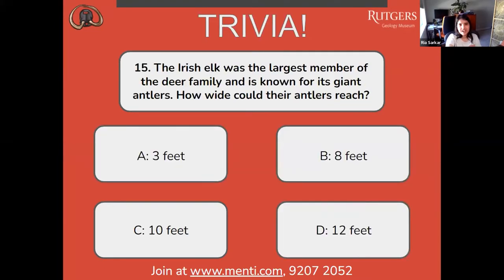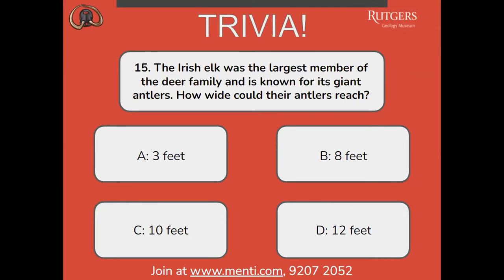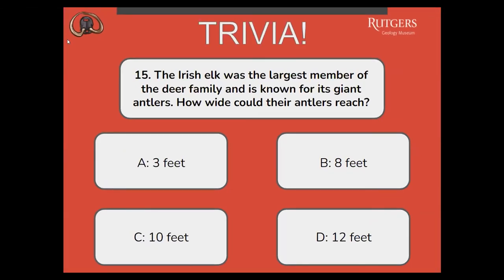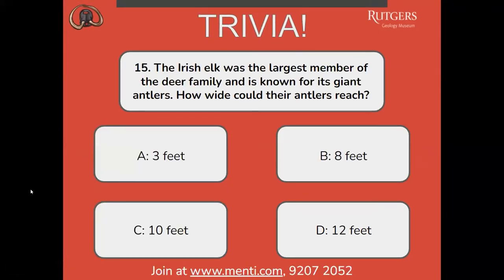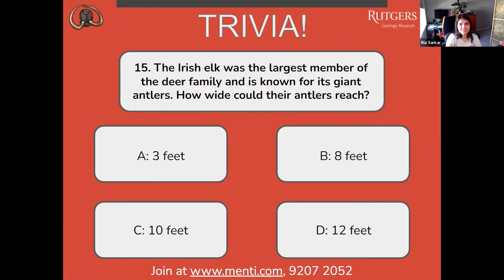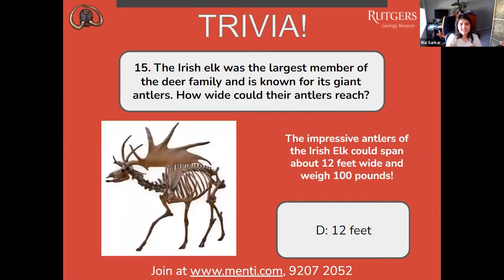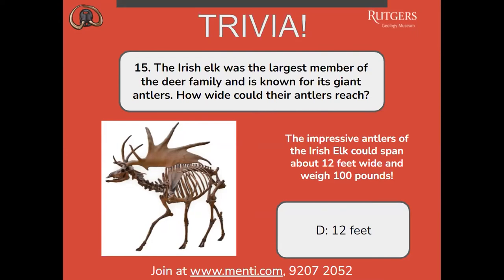Question fifteen: the Irish elk was the largest member of the deer family, known for its giant antlers. How wide could their antlers reach? A, 3 feet; B, 8 feet; C, 10 feet; or D, 12 feet? You can actually see a skeleton in one of the museums in Philadelphia. The correct answer is D, 12 feet. The impressive antlers of the Irish elk could span about 12 feet wide and weigh 100 pounds. Only one person picked D — good job, whoever that was.